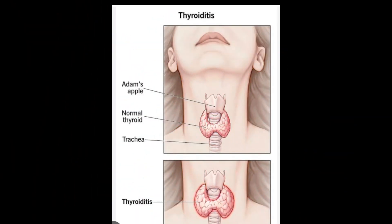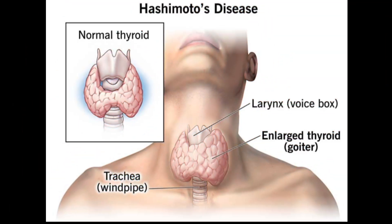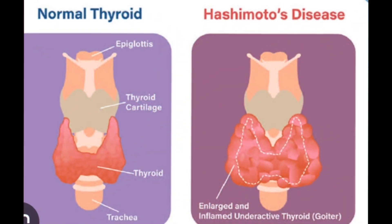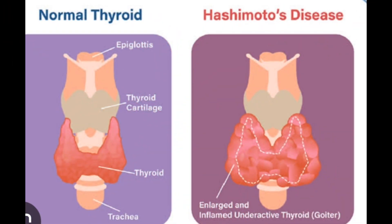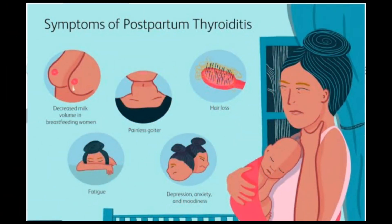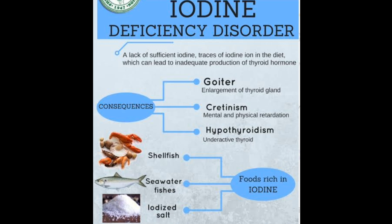Conditions that cause hypothyroidism include thyroiditis — an inflammation of the thyroid gland that can lower hormone production. Another cause is Hashimoto's thyroiditis, a painless autoimmune condition where the body's cells attack and damage the thyroid; this is an inherited condition. Postpartum thyroiditis occurs in five to nine percent of women after childbirth and is usually temporary.